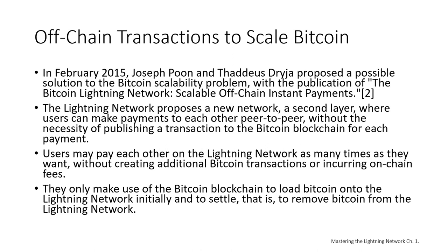Instead, the Lightning Network proposes a new network — a second layer — where users can make payments to each other peer-to-peer without publishing a transaction to the Bitcoin blockchain for each payment. Users may pay each other on the Lightning Network as many times as they want without creating additional Bitcoin transactions or incurring on-chain fees. They only use the Bitcoin blockchain to load Bitcoin onto the Lightning Network initially and to settle — that is, to remove Bitcoin from the Lightning Network. The result is that many more Bitcoin payments can take place off-chain, with only the initial loading and final settlement transactions needing to be validated and stored by Bitcoin nodes.